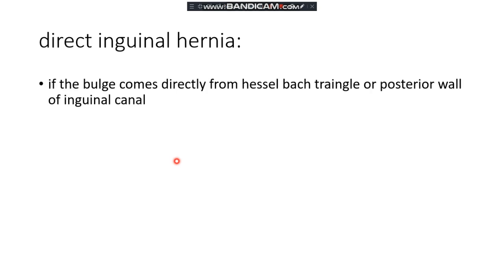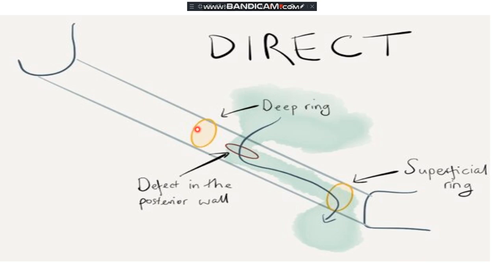Then we have direct inguinal hernia. If the bulge comes out from Hesselbach's triangle or through the posterior wall of the inguinal canal, it is direct. There is no defect in the deep ring, but there is a defect in the posterior wall of the inguinal canal. Since the inferior epigastric artery is lateral and this defect is medial to it, it is direct inguinal hernia. The contents come out through the superficial ring.